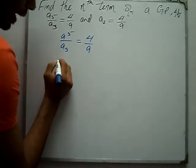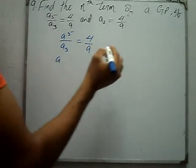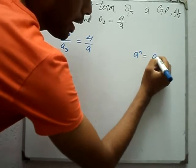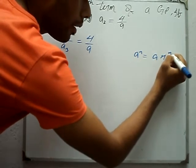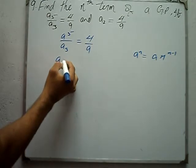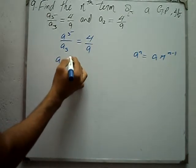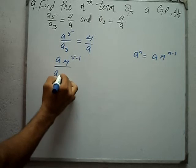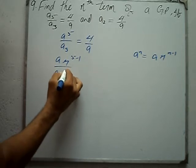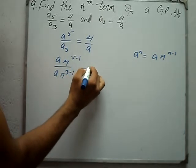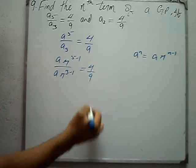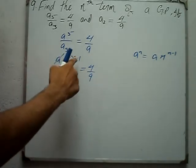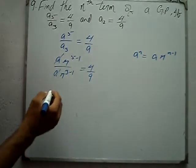A5 can be written using the formula An equals a times r to the power n minus 1. So A5 is a times r to the power 5 minus 1, over A3 which is a times r to the power 3 minus 1.